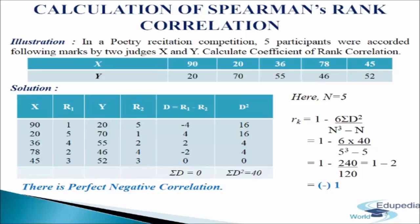In the last column we write d square: minus 4 squared is 16, 4 squared is 16, 2 squared is 4, minus 2 squared is 4, 0 squared is 0; sigma d square equals 40. The number of pairs is 5. We put the values into the formula: rk equals 1 minus 6 sigma d square divided by n cubed minus n. After calculation, we get minus 1, so there is a perfect negative correlation between the x and y series. This is how we calculate the coefficient of rank correlation when ranks are not given.